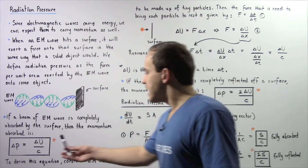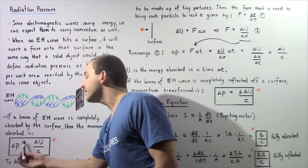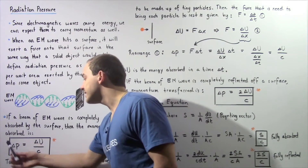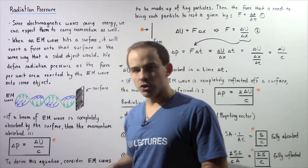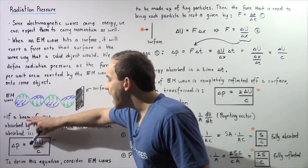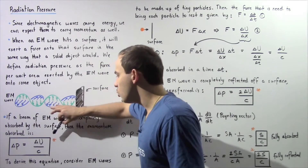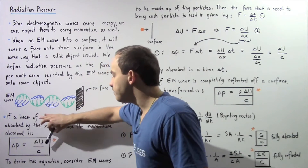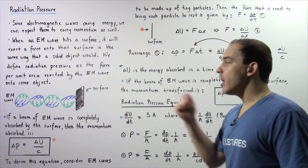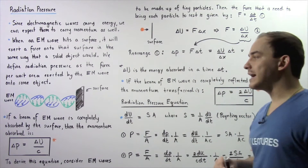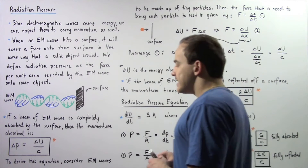The change in our momentum, delta p — the quantity of momentum absorbed by the surface — is equal to the quantity of energy absorbed by the surface, delta u, divided by c, where c is simply the speed of our electromagnetic radiation.